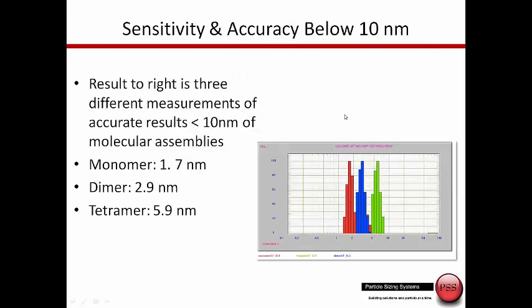This system is also very sensitive to very small particles, particles under 10 nanometers. We see three results here - three individual measurements plotted on a single graph. These were molecular assemblies where the monomer was at 1.7 nanometers, the dimer was at 2.9, and the tetramer at 5.9. The NICOMP very accurately shows these three different sizes right in the range where they are expected for this particular molecular assembly.